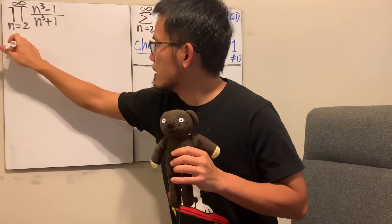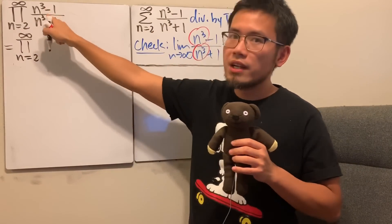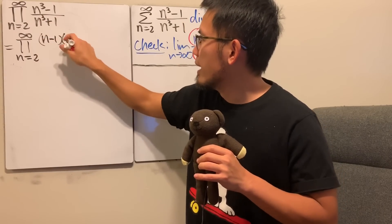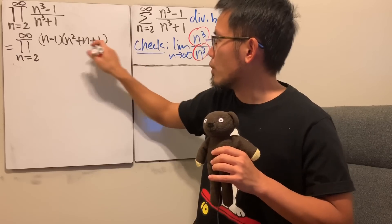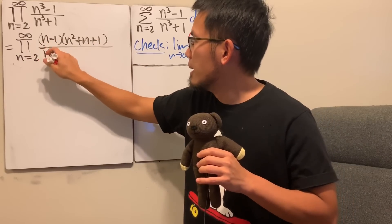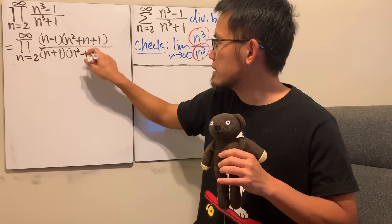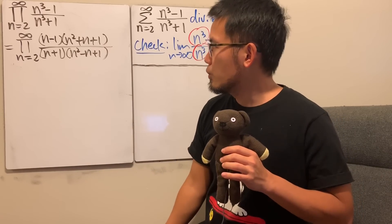So here is our pi, and this is n equals 2 to infinity. Factoring out the difference of two cubes, we get the top is n minus 1 times n squared plus n plus 1 squared, which is 1, and then divide it by n plus 1 on the bottom instead. And then here we have n squared minus n plus 1, like that.